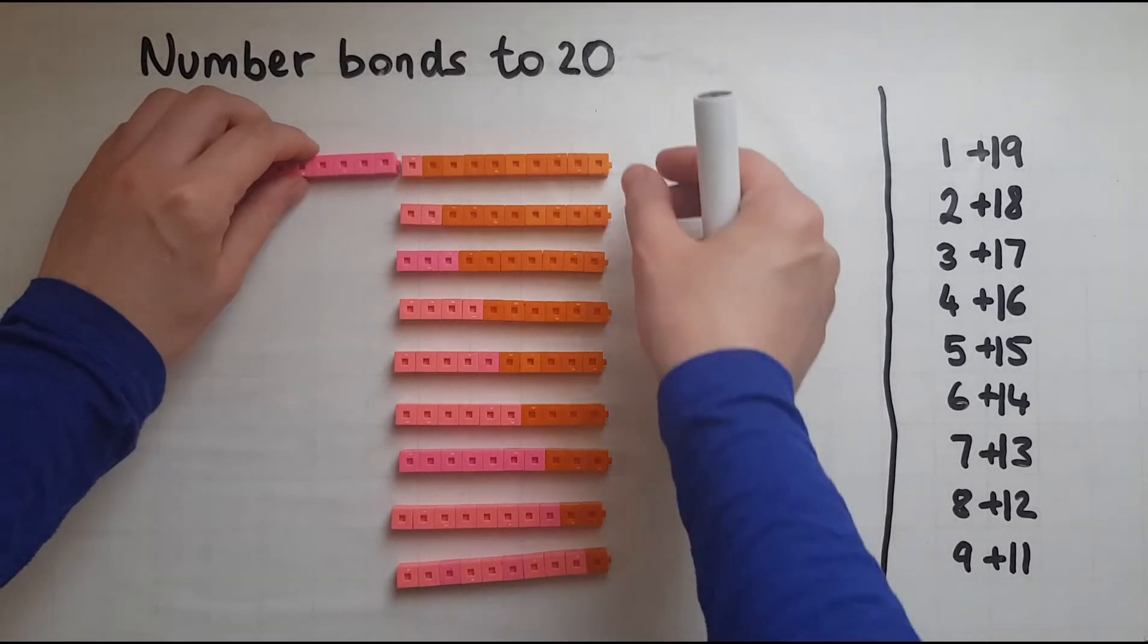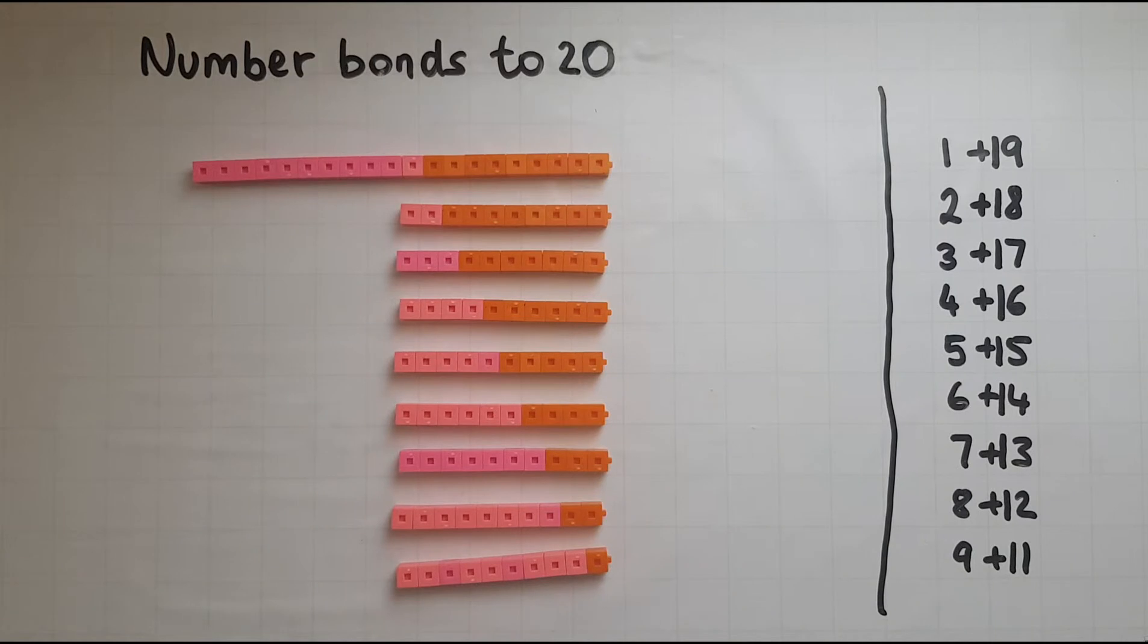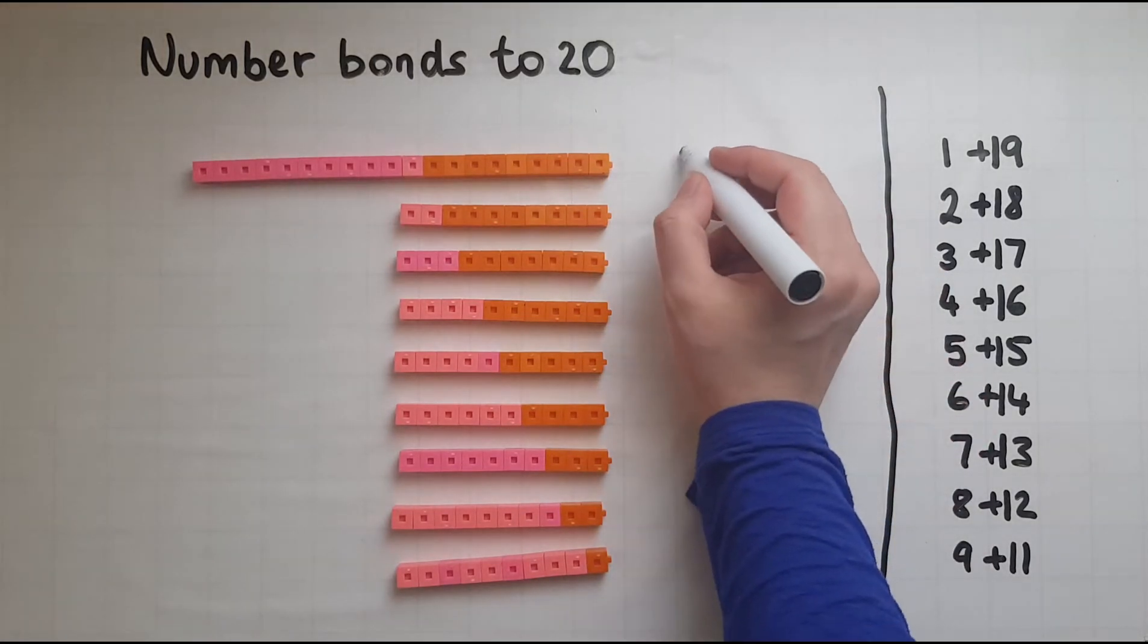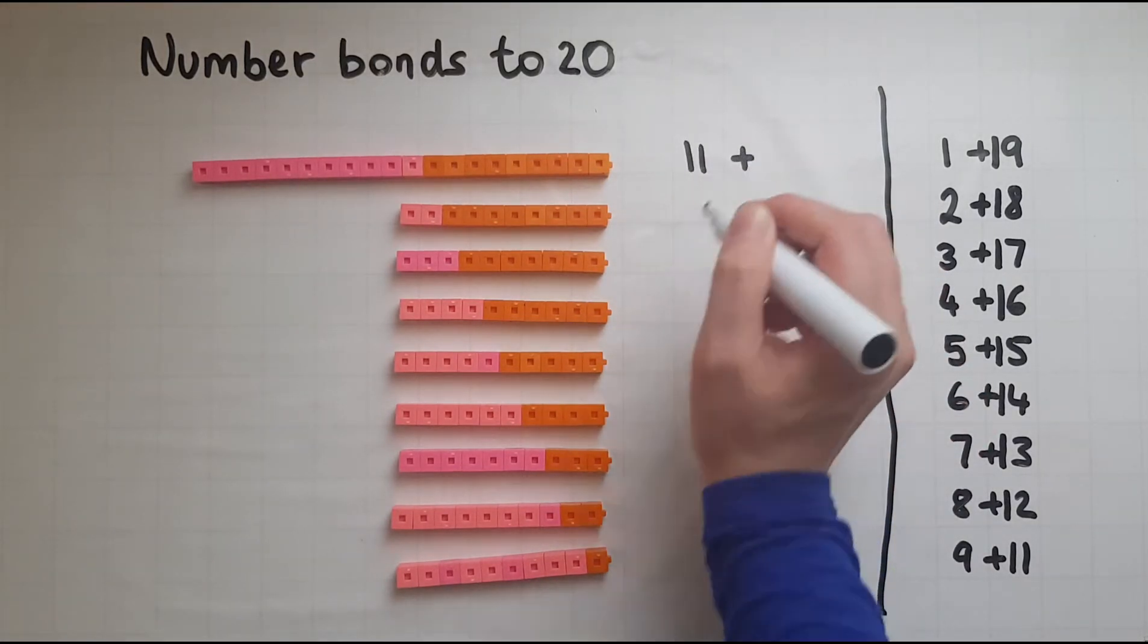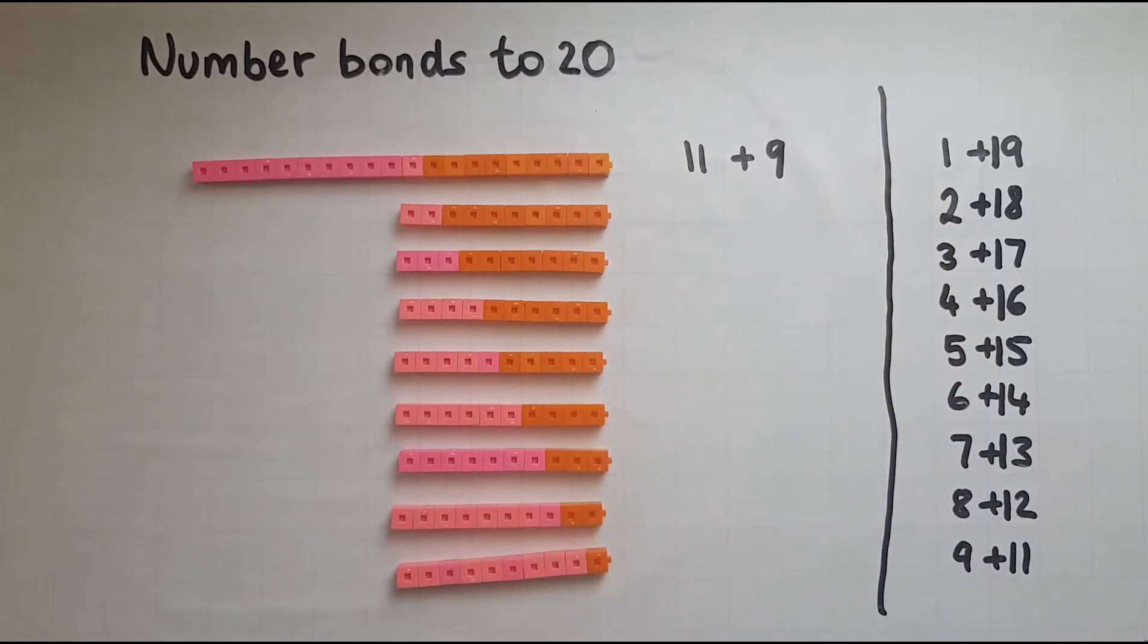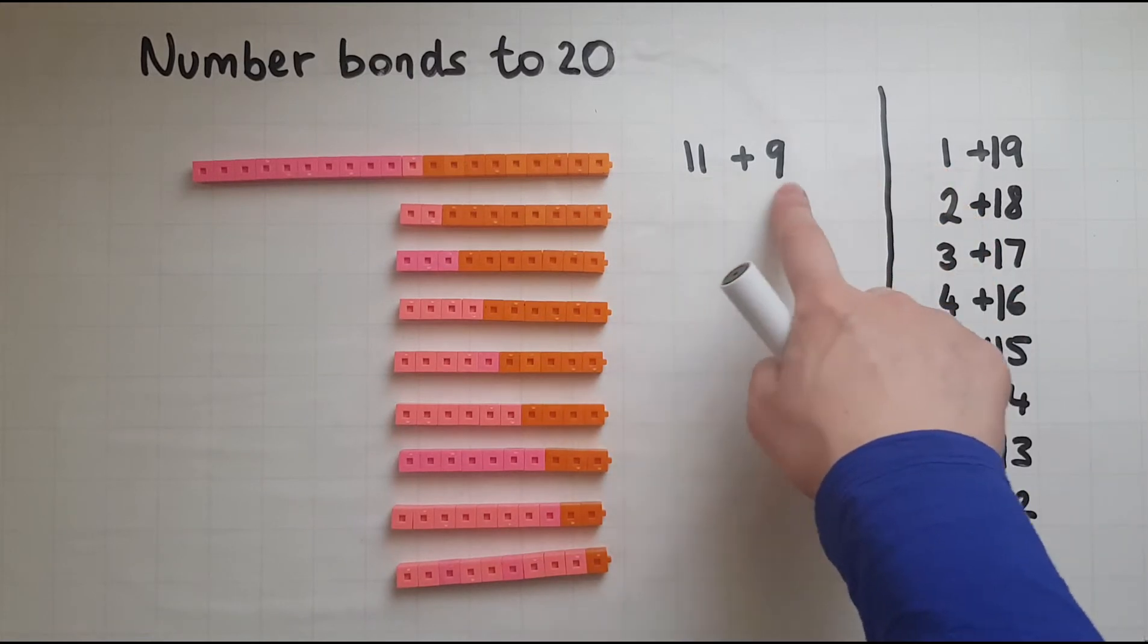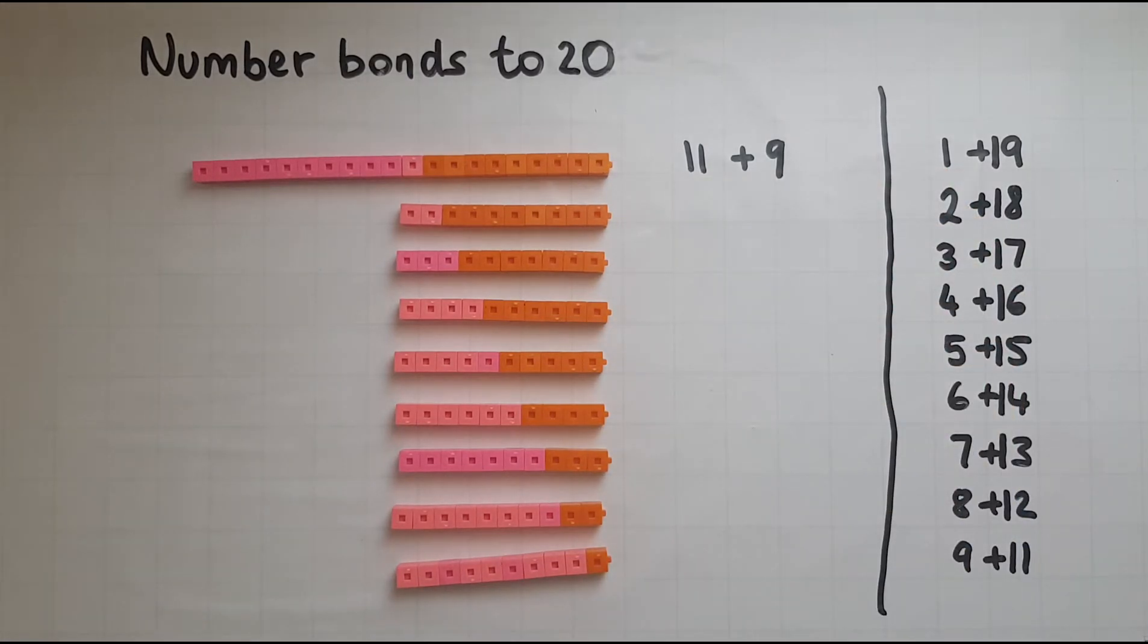So if I had instead 11 and 9, that still makes 20. So that one in front, instead of going to the 9, it's going to the 1. So 11 and 9 gives us 20.